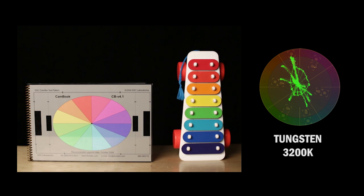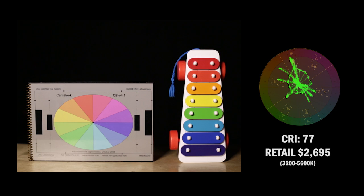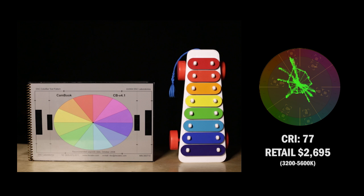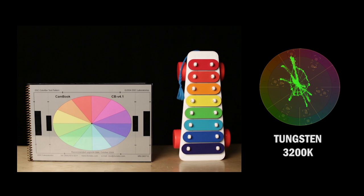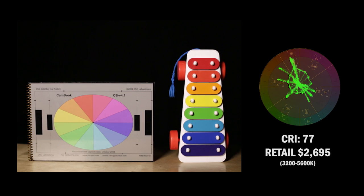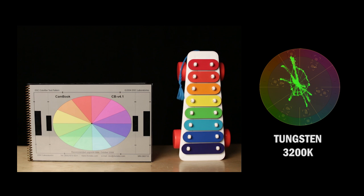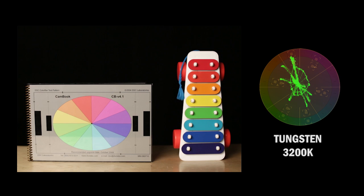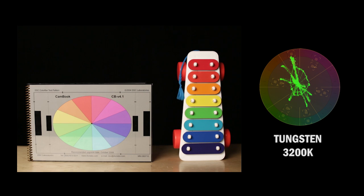So here's our tungsten and here's our 77. Now, on the vector scope, you can see that it's pulling away a little bit from the blue, reaching out maybe a little bit more toward the orange and green. But overall, not too bad. If you really pay attention to the colors on the xylophone, you can see some shifts in those colors. But all in all, for a 77 rating, the result is pretty good.